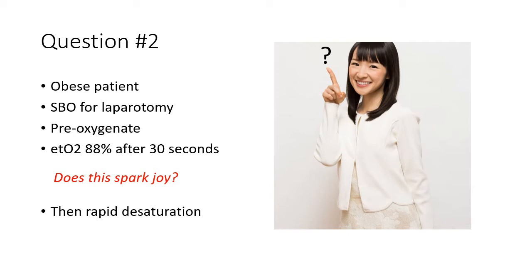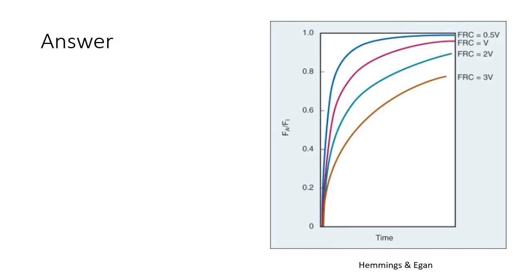Well, the answer that you may often hear is that the patient is hypermetabolic. Now that may be true, but the other factor to consider is that the FRC may be substantially reduced in the obese patient, particularly if there is additional pathology. Very rapid pre-oxygenation can mean one of two things: either the alveolar ventilation rate is very high, or the FRC is very low.